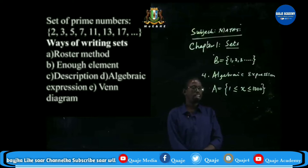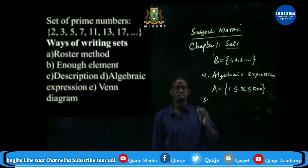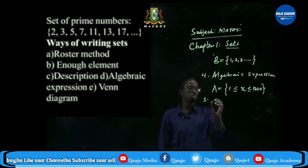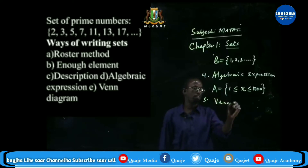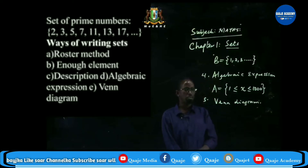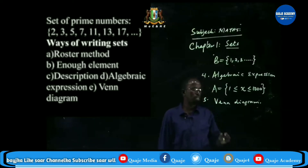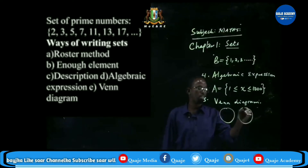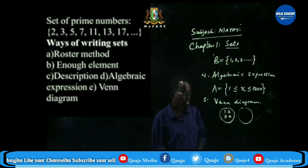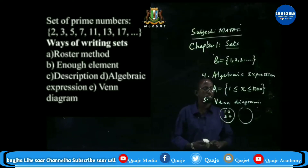The last method, number five, is by Venn diagram. You use shapes to represent the numbers. For example, you draw circles and write the numbers inside — 1, 2, 3, 4, and so on. So these are the five different ways of writing sets.